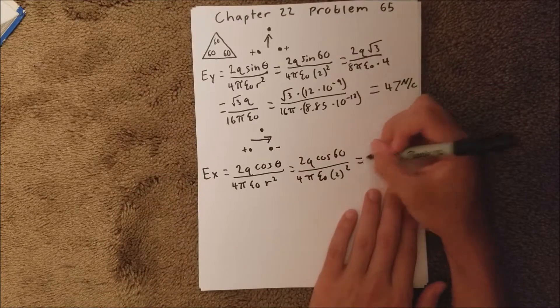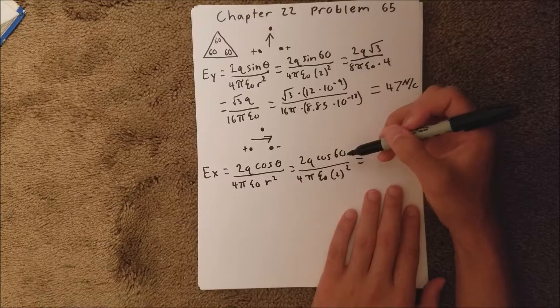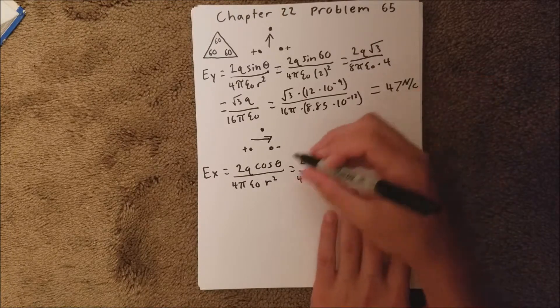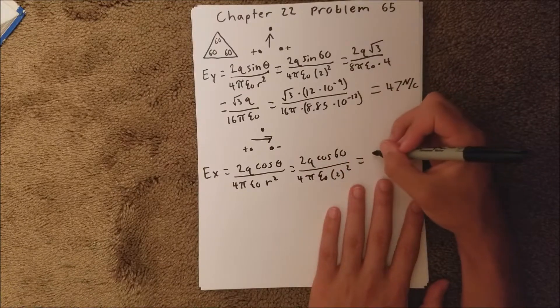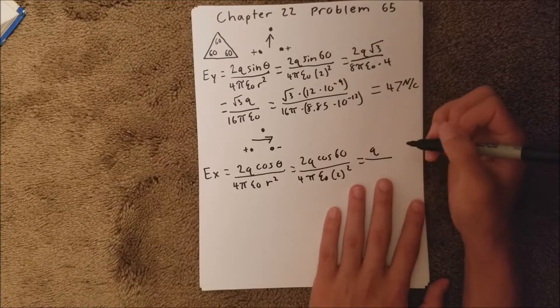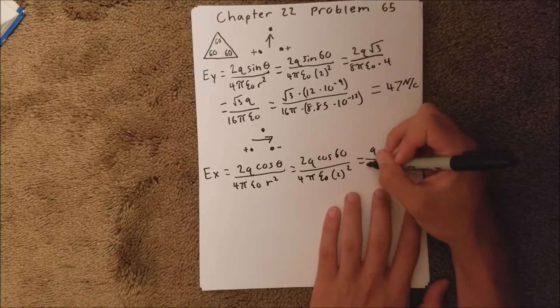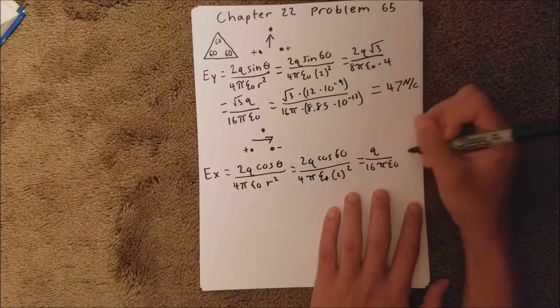We know that the cosine of 60 is 1 half, which will cancel out with this 2 here. So we can just say q over 16 pi epsilon sub 0.